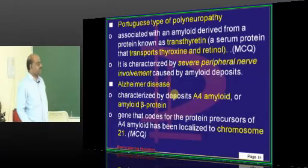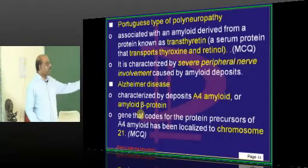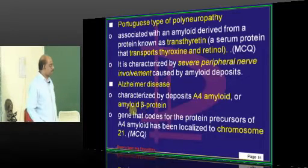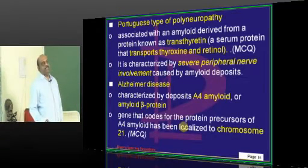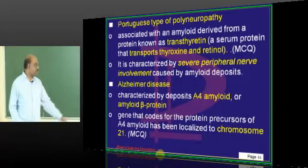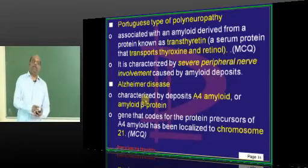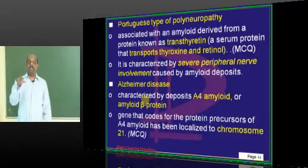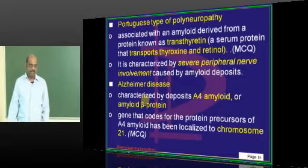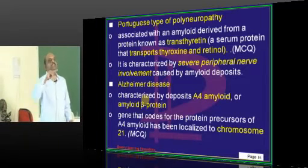In Alzheimer's disease, A4 amyloid (amyloid beta protein) is the type that deposits. Chromosome 21 — Down syndrome's chromosome — is the important one here. That is why Down syndrome patients also suffer from presenile dementia with Alzheimer's onset very early in life. Remember: chromosome 21, A4 amyloid, and Alzheimer's.